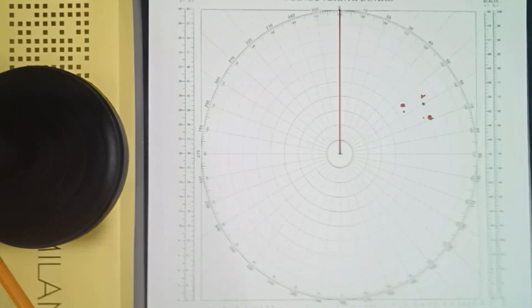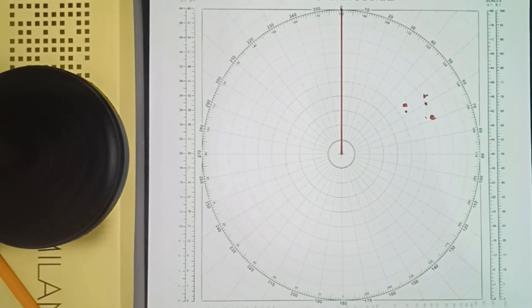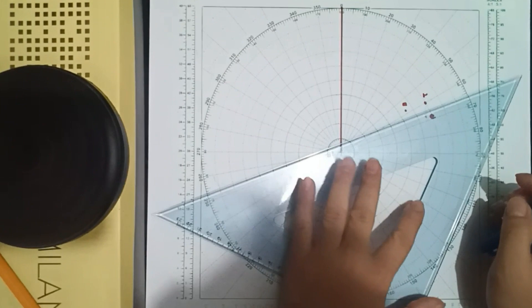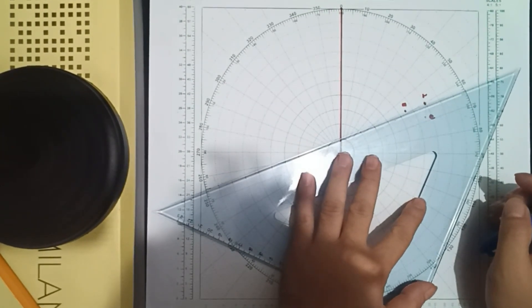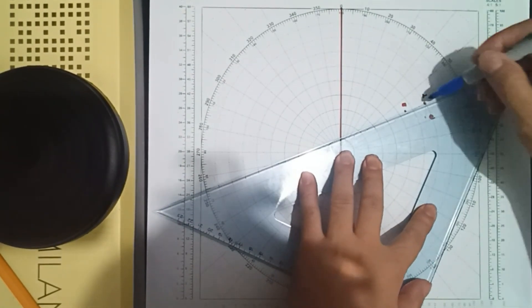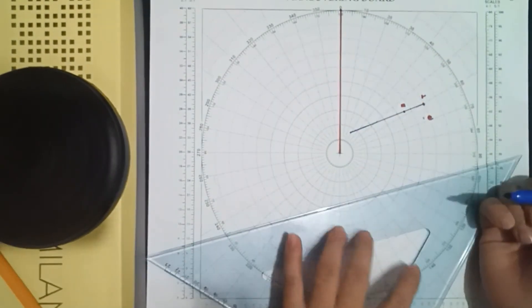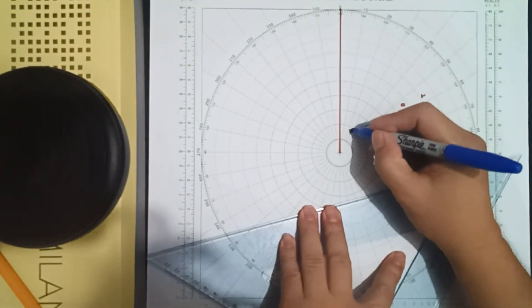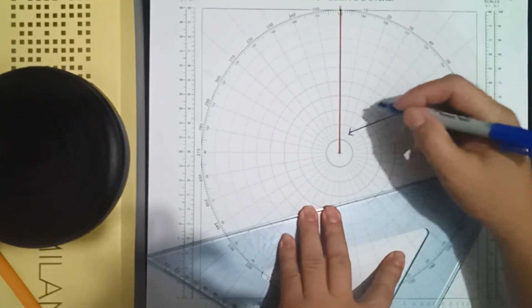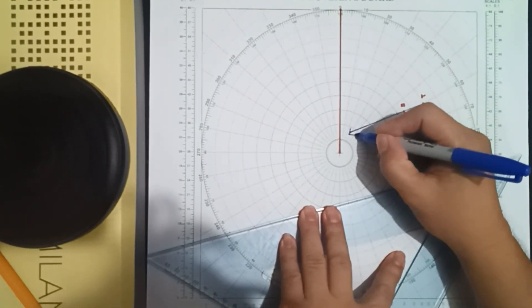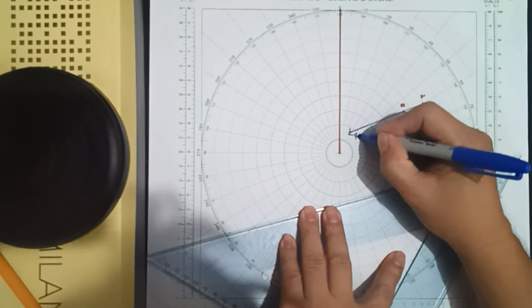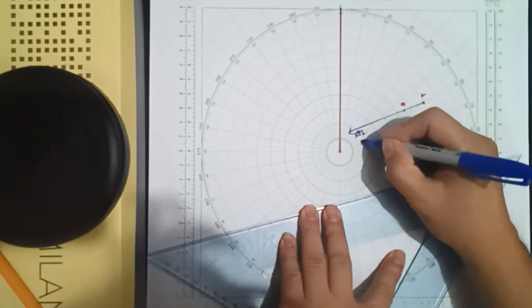The first thing that you are going to do is to connect from R to M in order to get the RML. So, from R to M is your RML or the relative victor.